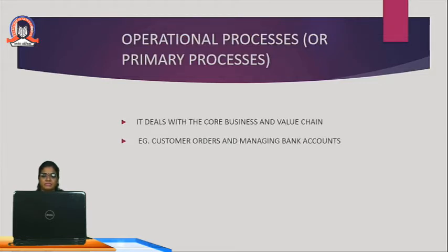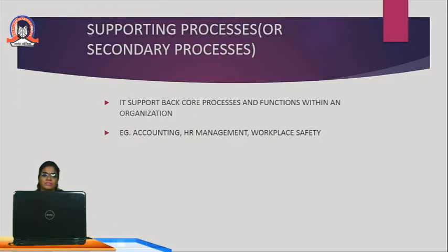Operational processes are primary processes. They deal with the core business and value chain. For example, customer orders and managing bank accounts — the basic chart of the business is controlled in this process. Supporting processes are secondary processes that support the core processes and functions within an organization. Examples include accounting, HR management, and workplace safety.